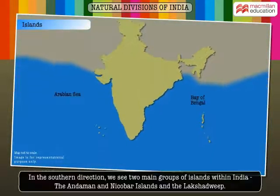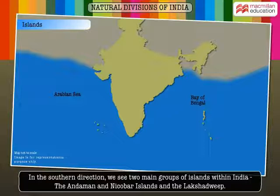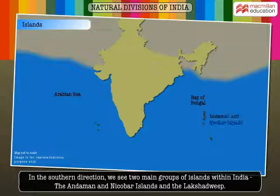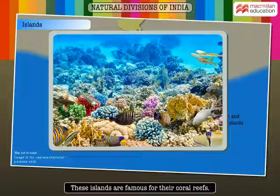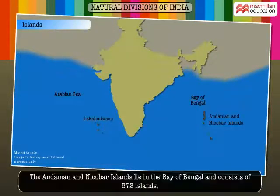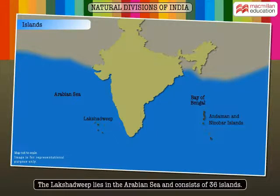As we move further in the southern direction, we see two main groups of islands within India: the Andaman and Nicoba Islands and the Lakshwadweep. These islands are famous for their coral reefs. The Andaman and Nicoba Islands lie in the Bay of Bengal and consist of 572 islands. The Lakshwadweep lies in the Arabian Sea and consists of 36 islands.